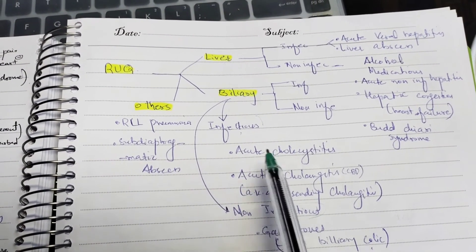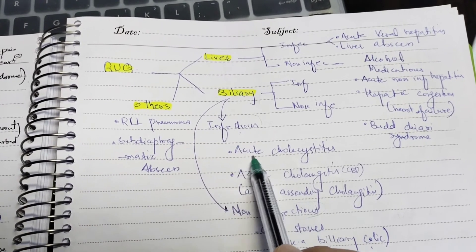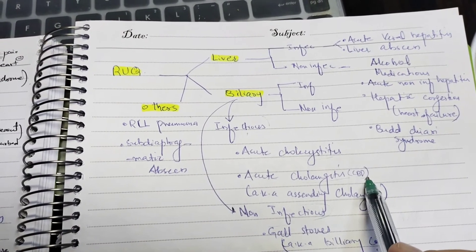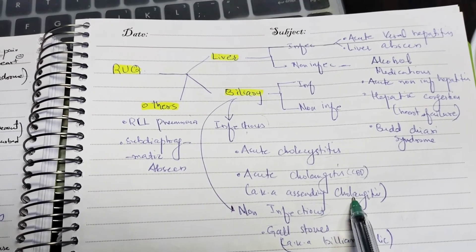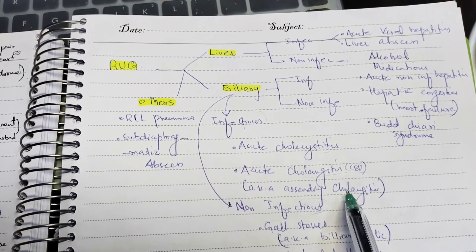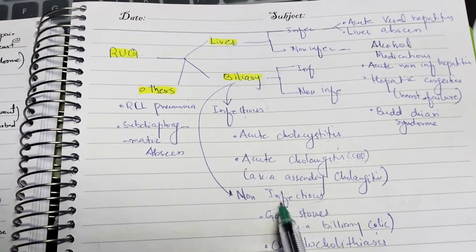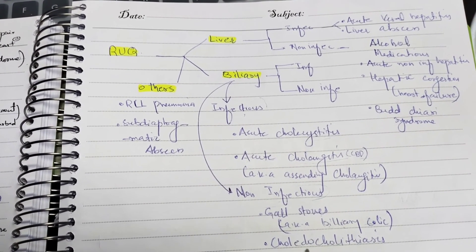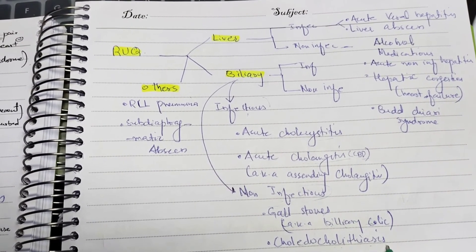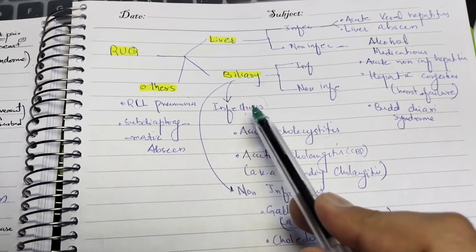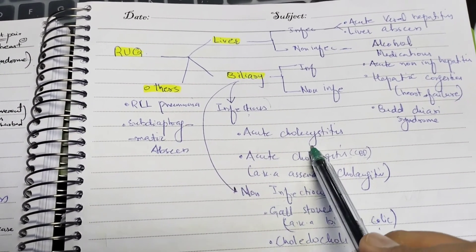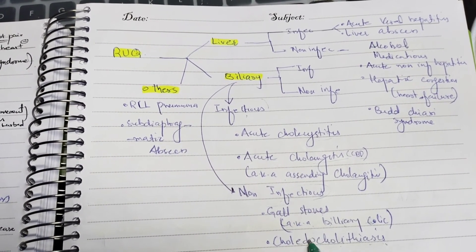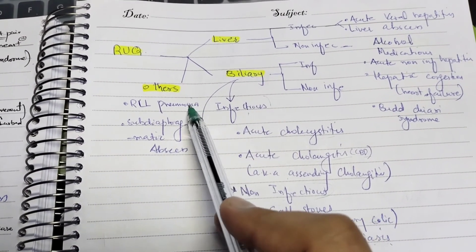For biliary colic, we also divide into infectious and non-infectious. Infectious causes include acute cholecystitis and acute cholangitis, also known as ascending cholangitis, involving the common bile duct. Non-infectious causes include gallstones, also known as cholelithiasis, and choledocholithiasis — stones in the common bile duct.